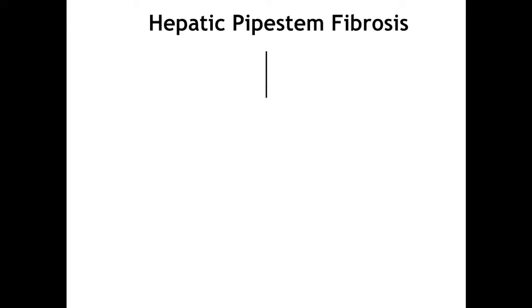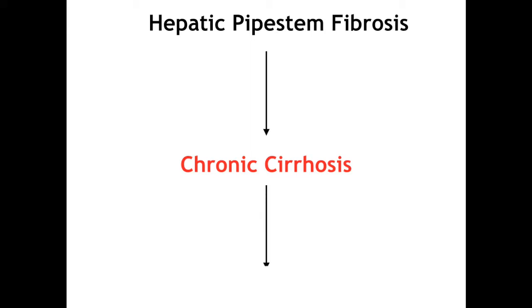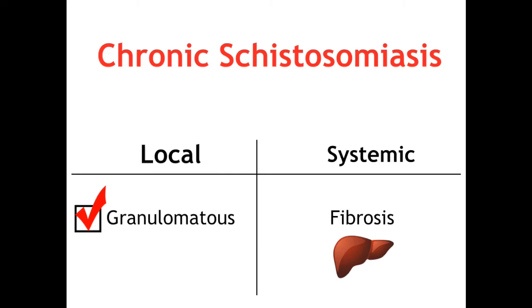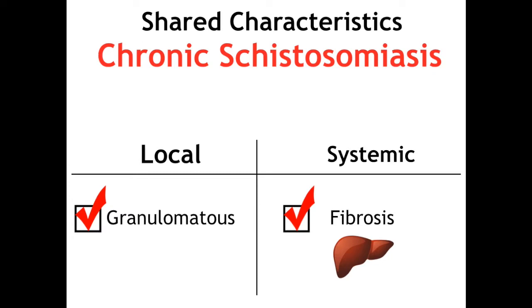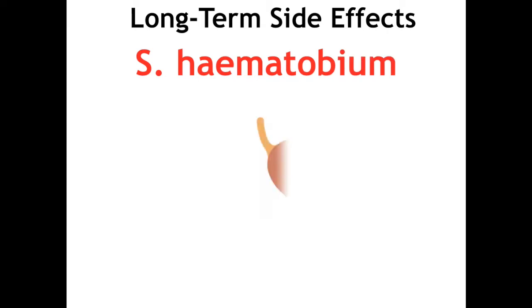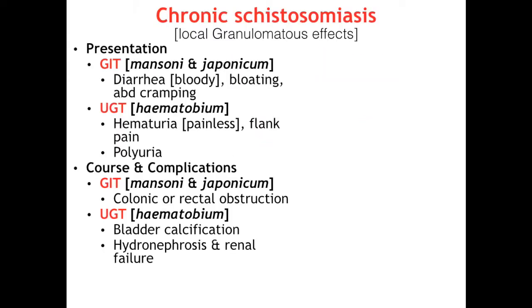All acute episodes in the liver share the same course and complications: chronic cirrhosis, the major complication of which is portal hypertension. Now that we've covered both the local and systemic effects of chronic schistosomiasis, we've covered everything the species share. Next, we focus on the long-term side effects specific to S. hematobium, the bladder fluke. We've covered bladder calcification and its complications of hydronephrosis and renal failure, however the favorite topic to test on for any fluke is the link between S. hematobium and transitional cell carcinoma.